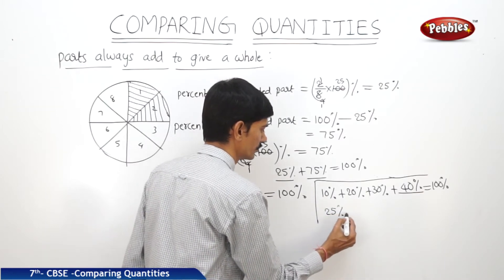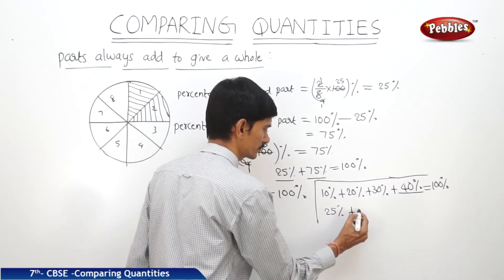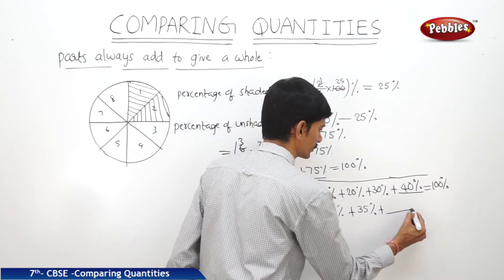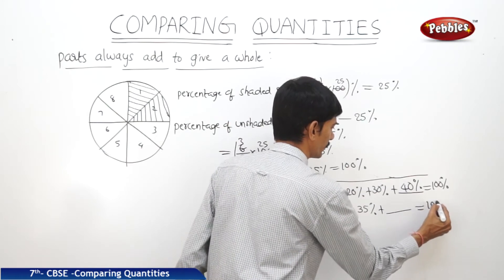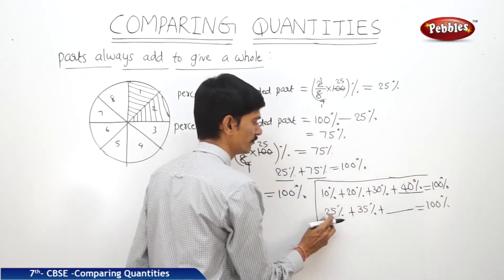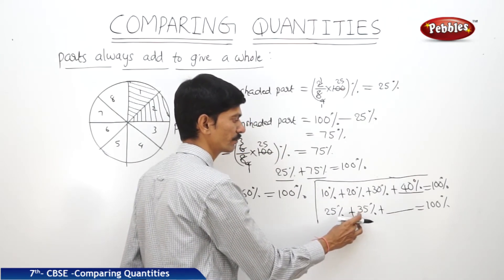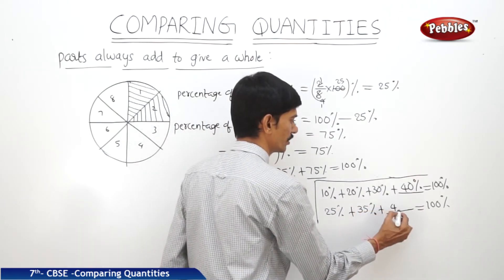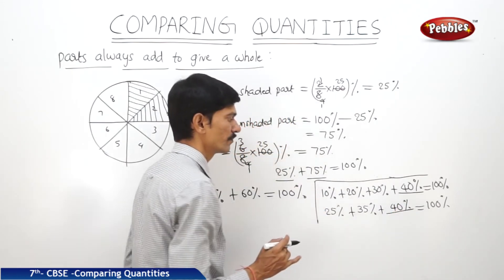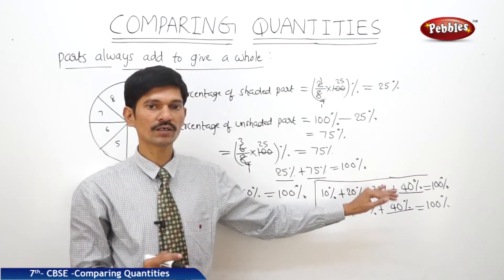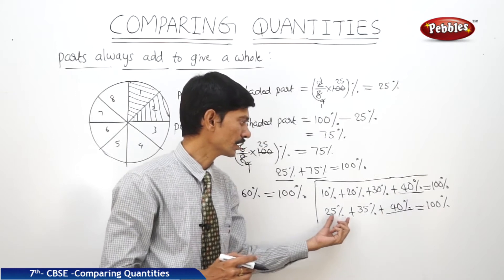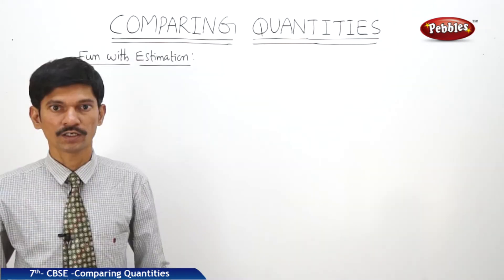Let us take another example: 25% plus 35% plus blank equals 100%. What is the blank? Here, 25 plus 35 is 60, and 60 plus 40 gives 100. So we can write 40%. Parts are always added to give the whole — to get 100% we add the different percentages.